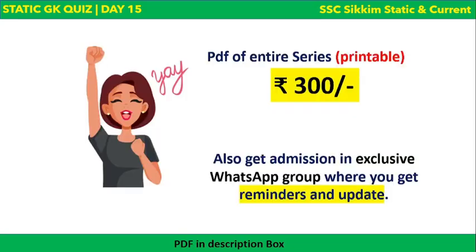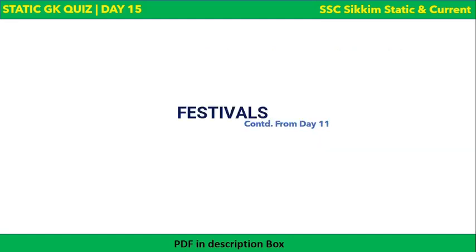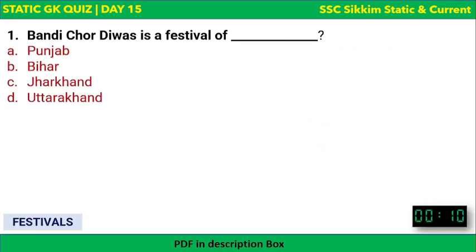The PDF of the entire series — both printable and digital — will cost you 300 rupees. You also get admission to an exclusive WhatsApp group where you get reminders and updates about the sessions. For this, please send a message to 7970586659 on WhatsApp. Let's proceed to the first topic: festivals.